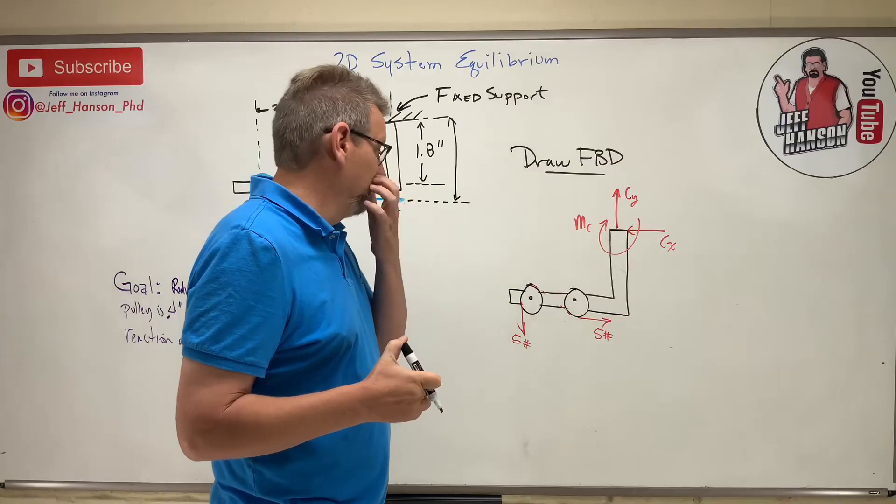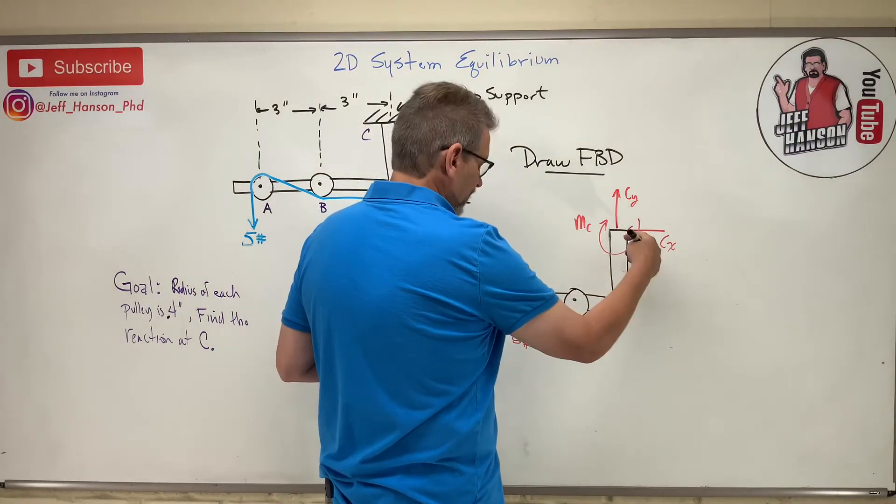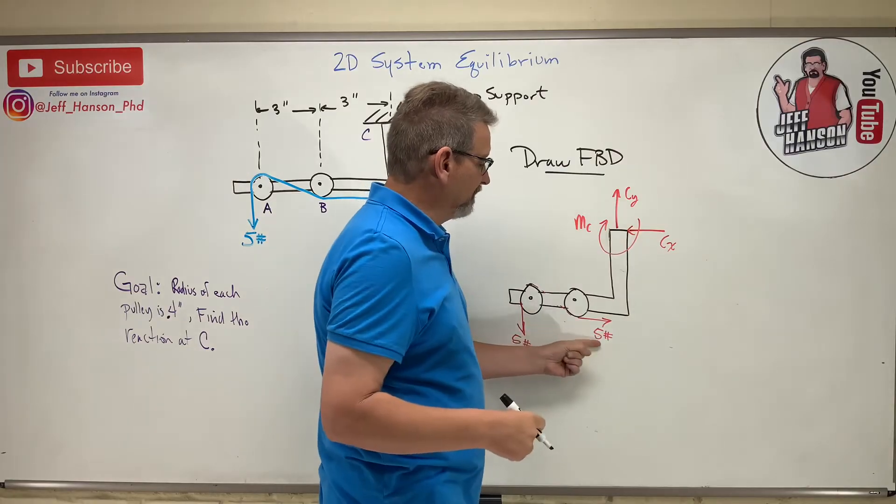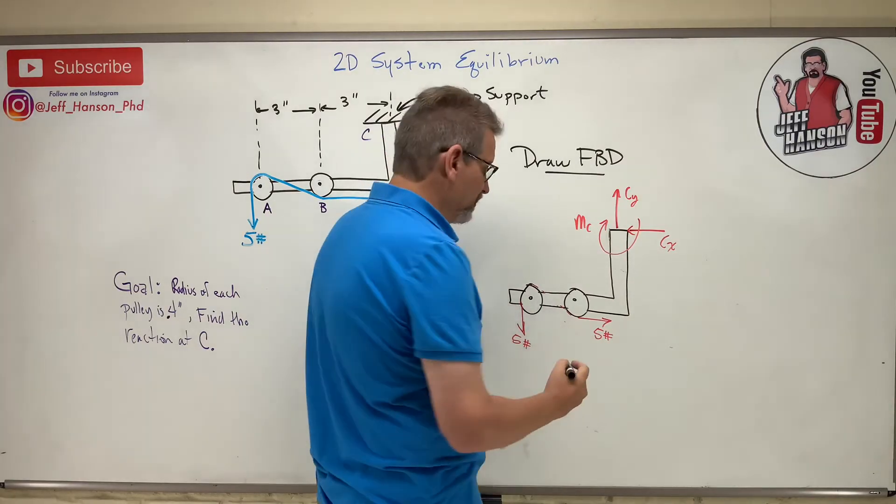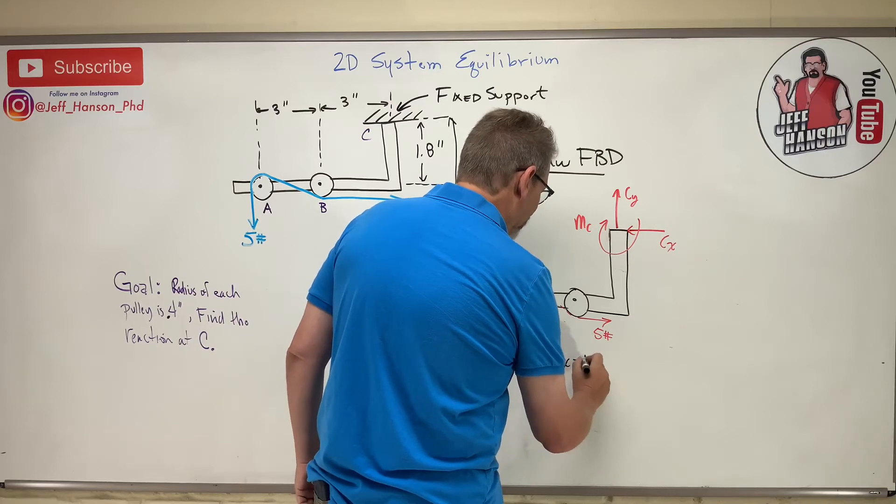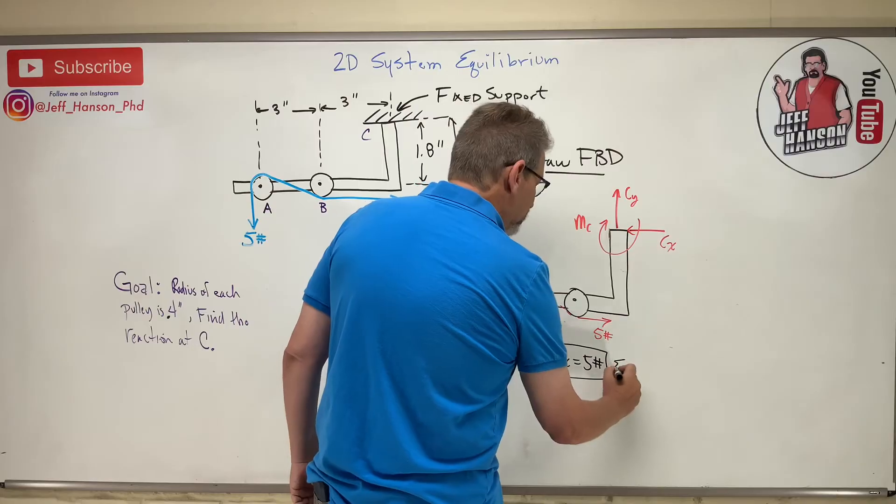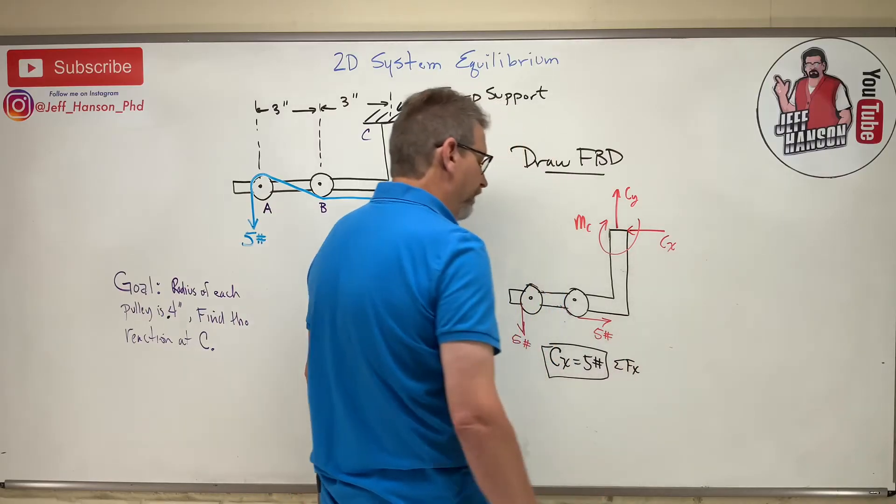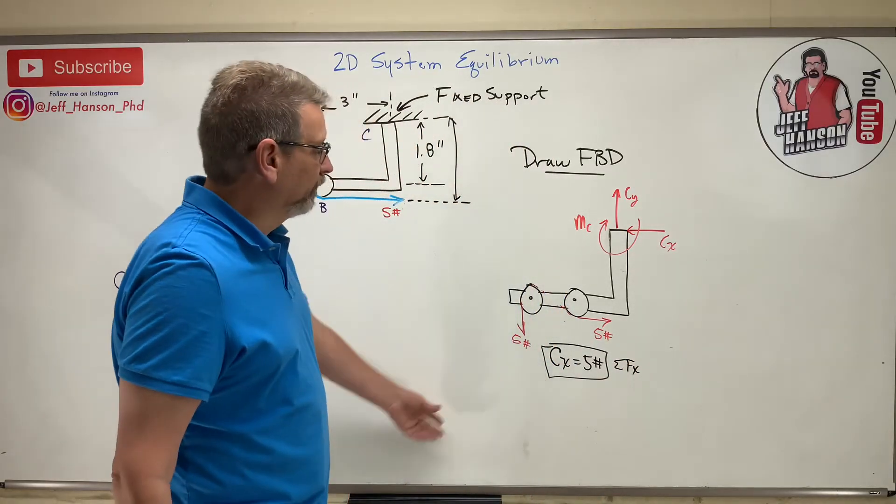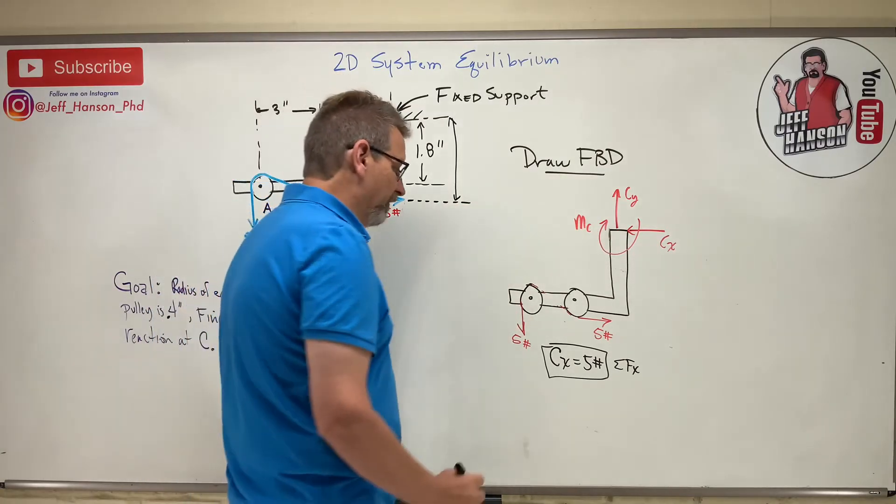Let's do x and y first. This is super easy, isn't it? If this guy goes this way then he has to be equal to that guy, the only other guy in the x direction, so Cx has got to equal 5 pounds. We just did the sum of the forces in the x in our head. Same for the y: I got that guy going up and that guy going down, so Cy must be equal to 5. That guy comes from the sum of the forces in the y.